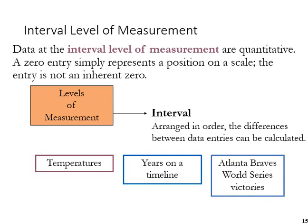Examples of interval data include temperatures, and by that we're not talking about Kelvin, because Kelvin has a theoretical zero. But if we're talking about Fahrenheit or Celsius, those include negative temperatures, the number zero is simply a position on a scale, so this is interval.